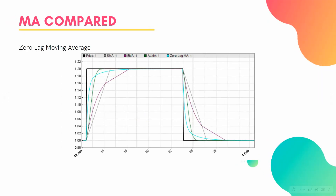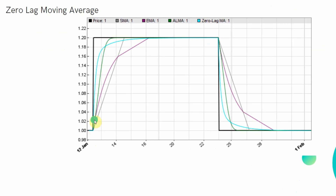Next is the zero lag moving average — it has a cooler name than most, which probably makes it popular. As you can see in light blue, when price shoots up it is rapid to keep up with it, significantly faster in the early stages of a big price move. However, the zero lag moving average is a bit slower in terms of longer-term accuracy as it approaches that price — there is a little lag getting to really accurate price levels. So if you want speed, zero lag might beat ALMA; but if you want accuracy, ALMA may be the better choice.